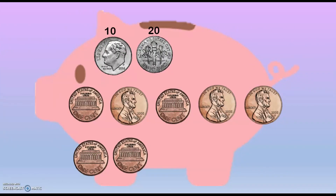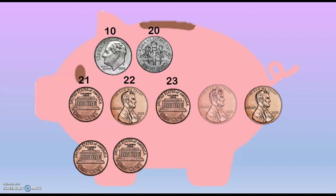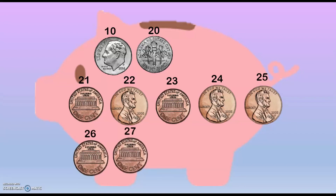We gotta switch. Now we're counting by ones: 21, 22, 23, 24, 25, 26, 27. We have 27 cents in this bank.